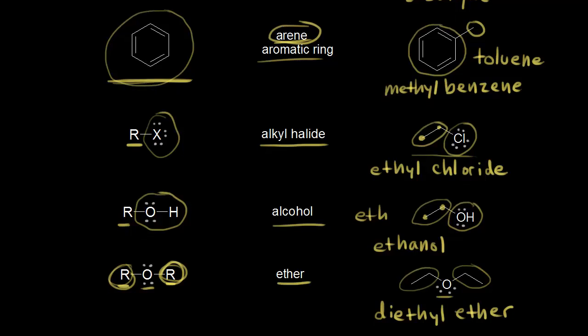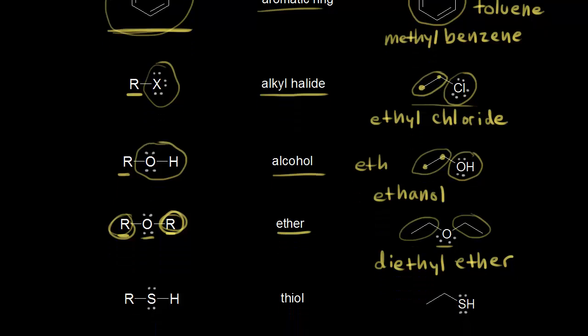Next we're going to look at a thiol. A thiol is similar to an alcohol. Instead of an OH though, we have an SH. So we have sulfur instead of oxygen.